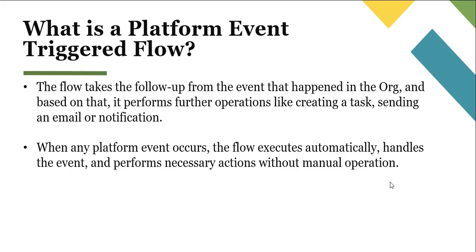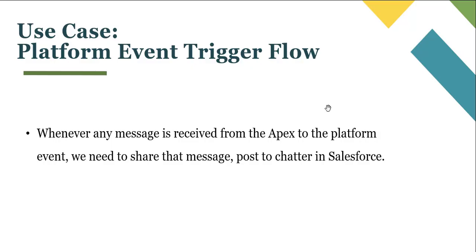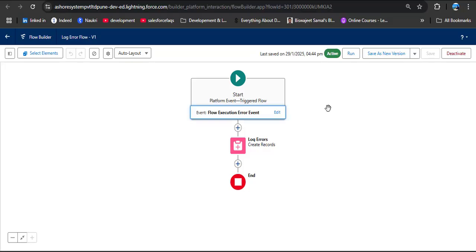When any platform event occurs, the flow executes automatically, handles the event, and performs necessary actions without manual operation. The use case is: whenever any message is received from Apex to the platform event, we need to share that message — post it to Chatter in Salesforce — automatically. We can create a platform event trigger flow, add a platform event in the flow, and whenever any message is received the flow will execute and share it to Chatter automatically.